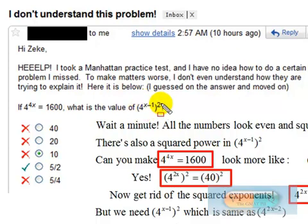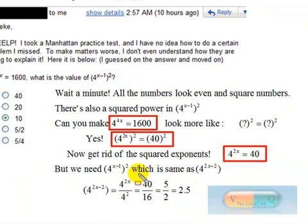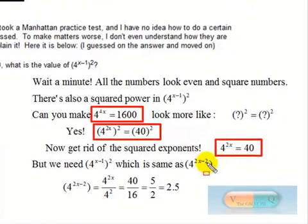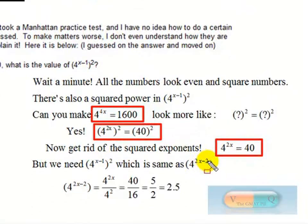So 4 to the 2x minus 2. That would be changing this expression to 4 to the 2x minus 2. Now, wait a minute. This is almost like this, except there's a minus 2 there.